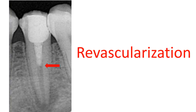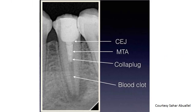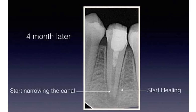Another new concept is revascularization. Bleeding is initiated from the periapical region, bringing stem cells into the root canal due to the wide apex. A blood clot forms and stays in the canal. Antibiotics are placed to disinfect the area, then MTA is placed over the blood clot. Over time, there is narrowing of the canal and healing begins. This is the new development in endodontics — regeneration and revascularization — now being performed even in Iraq.